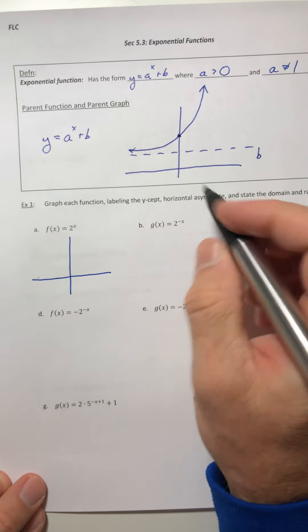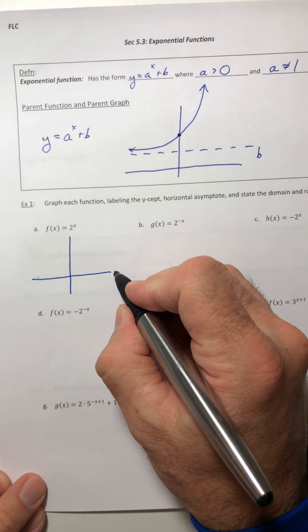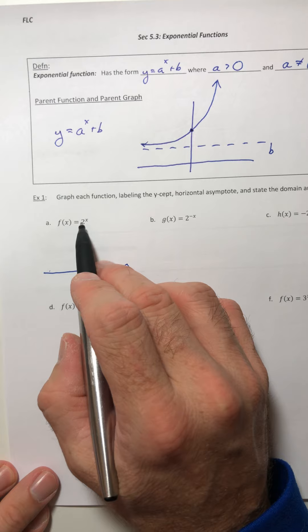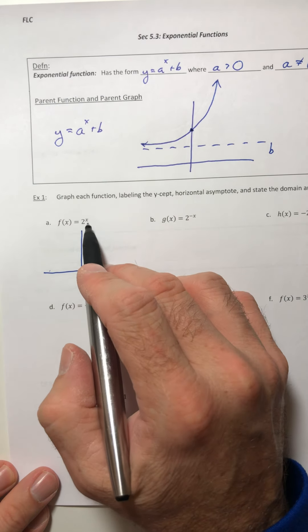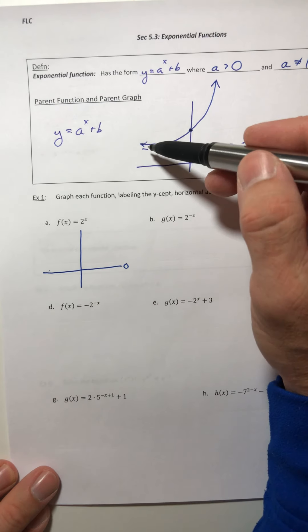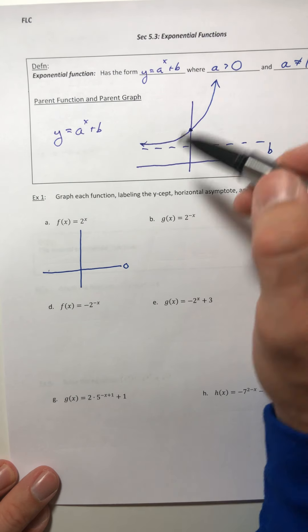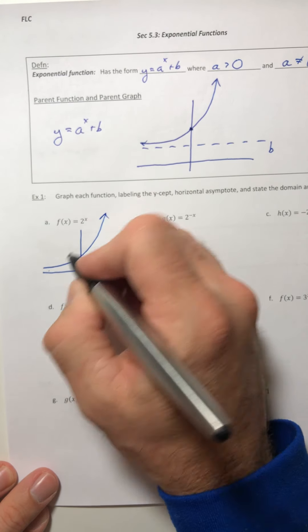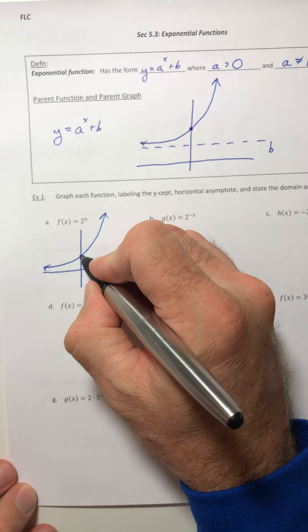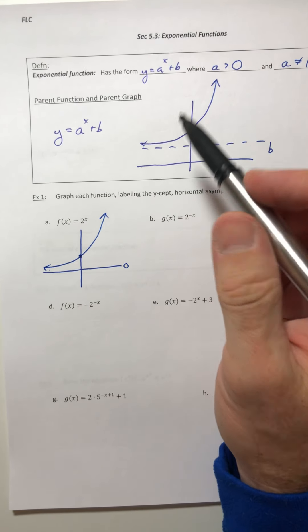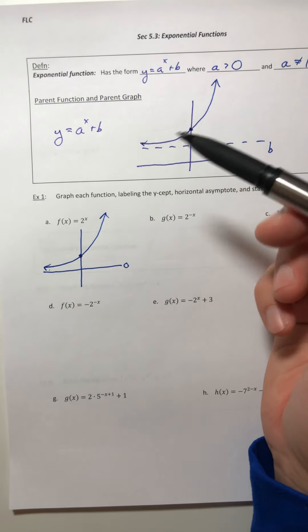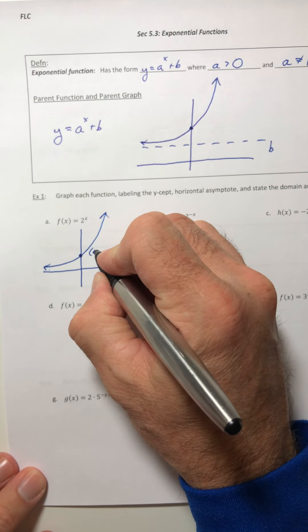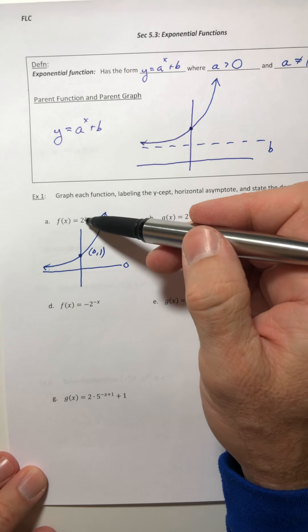2 to the x. There's no b value here, so that means your horizontal asymptote is at 0. We didn't do anything to the base. There's no negative in front of it, the x is still positive, so it still has that same shape as the parent graph. Something just like that. Now we need to find the y-intercept. How do you find a y-intercept for any graph? You plug in 0 for x. So if x is 0, the y comes out as a 1.